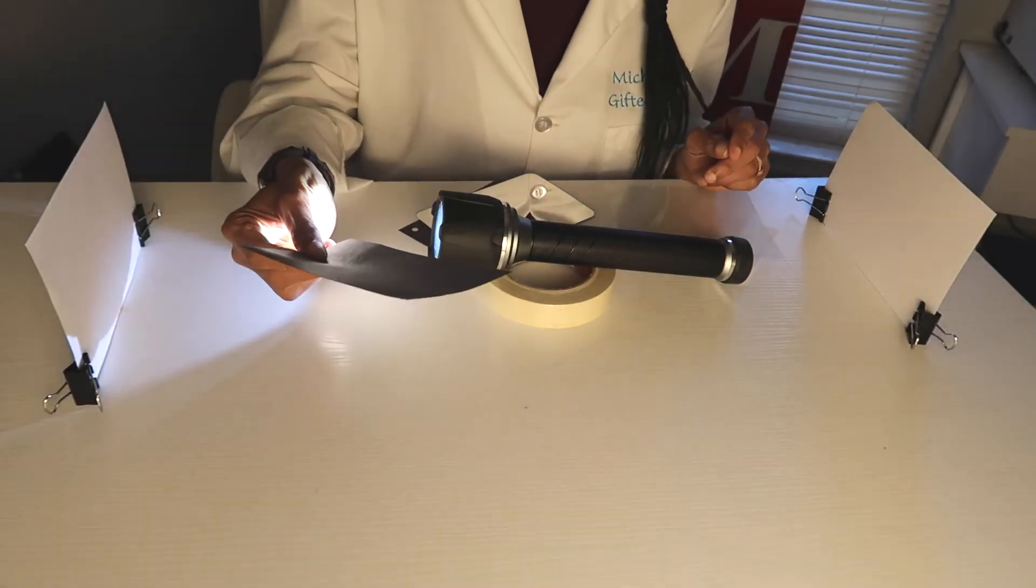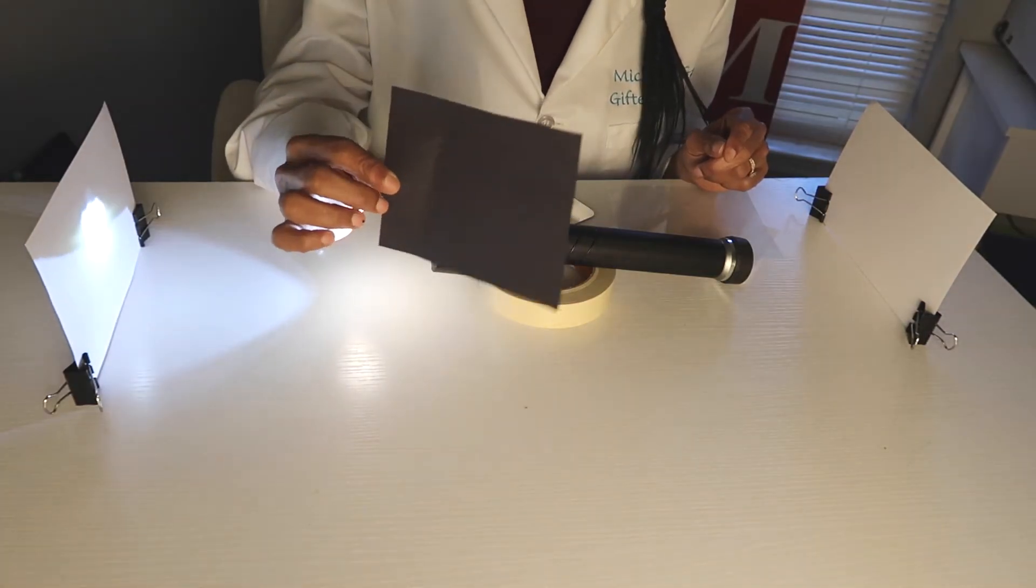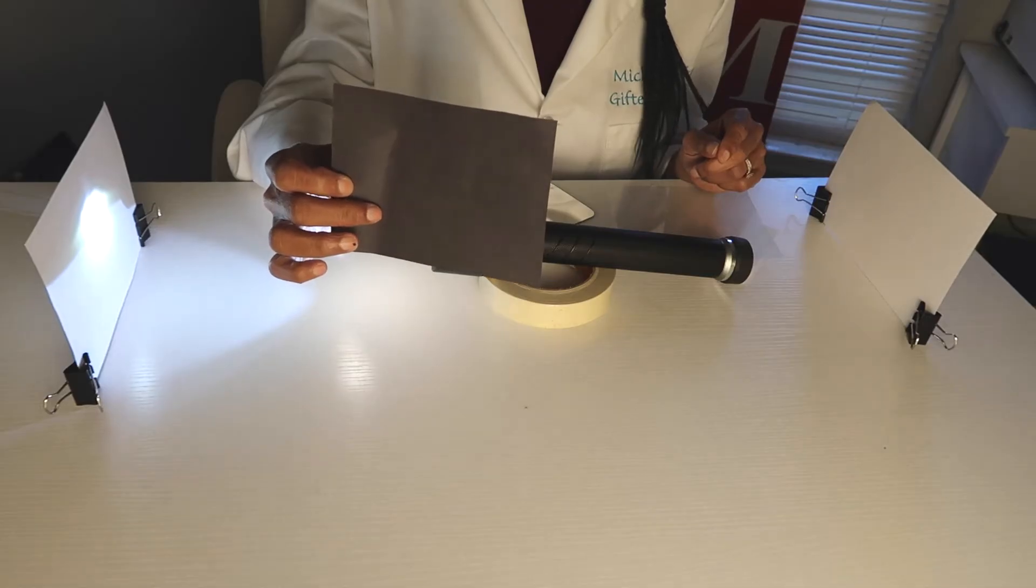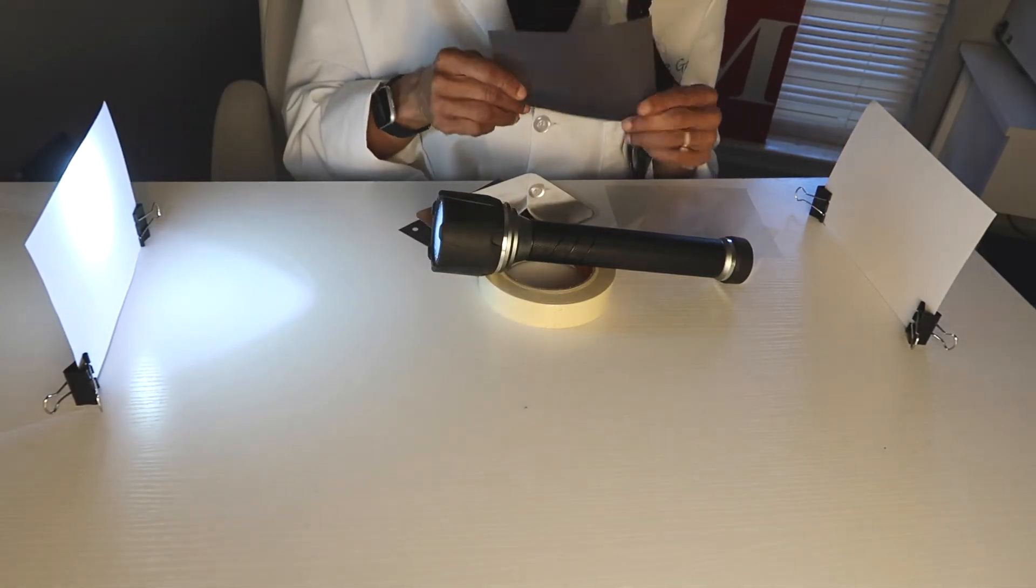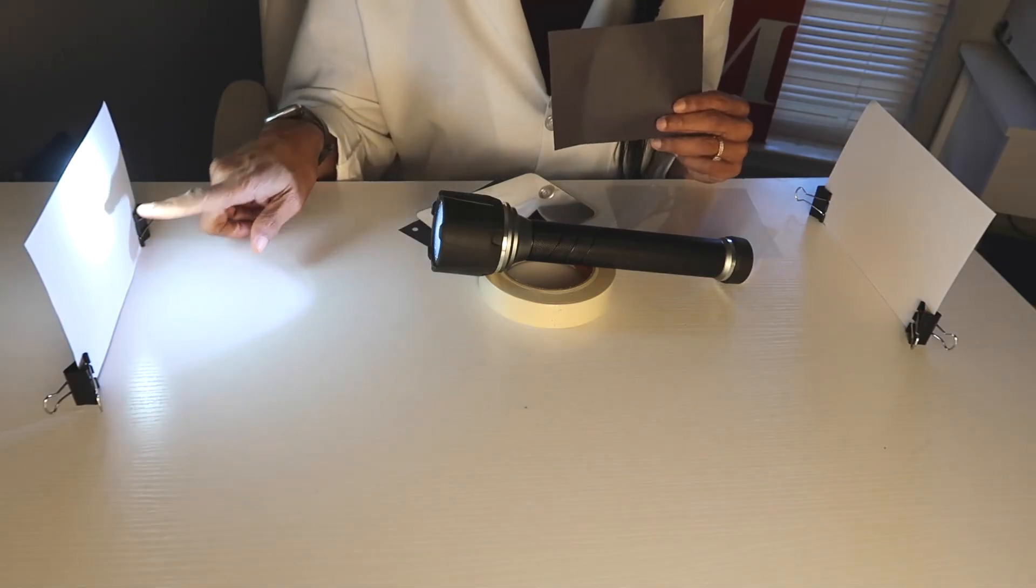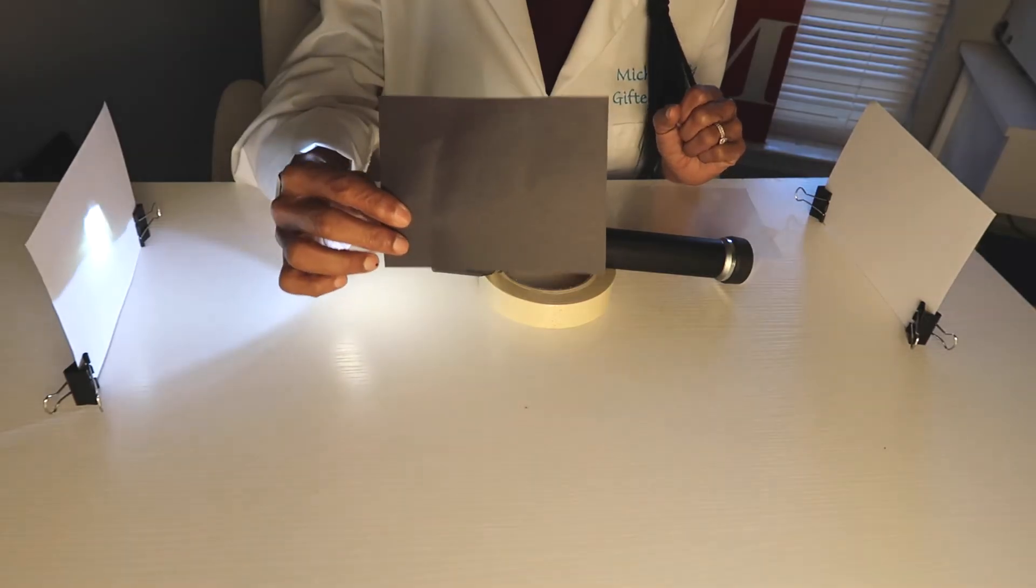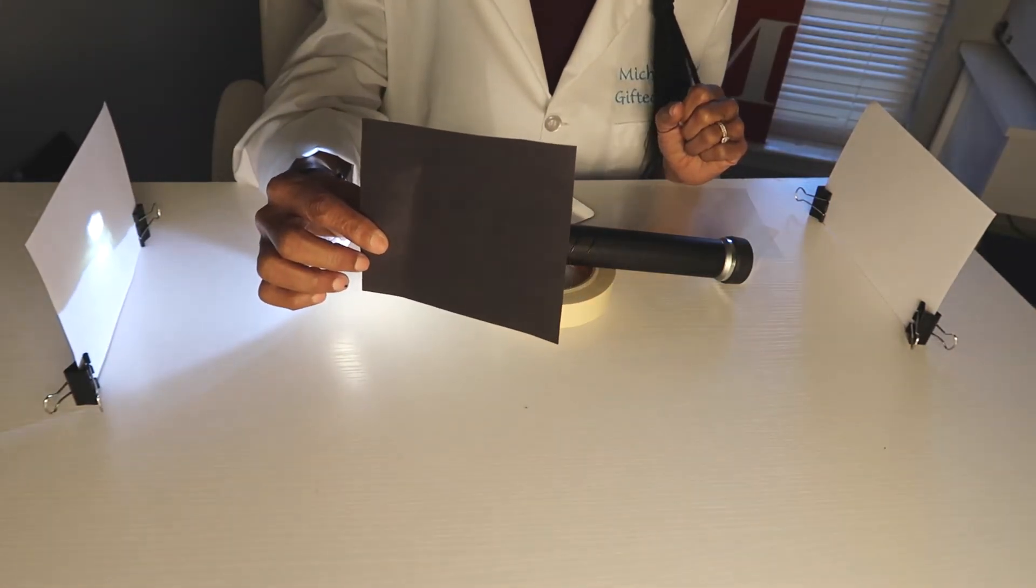Now we have a black sheet of construction paper. When we have material like a black sheet of construction paper, we call this opaque. Now notice our light again. What do you think is going to happen when I place the black piece of construction in front of the card?